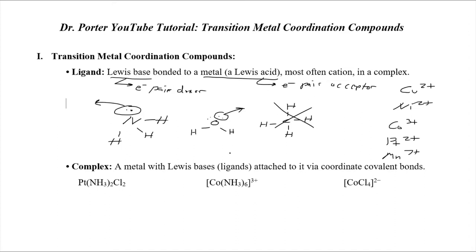So if we draw ammonia with its lone pair and then have something like cobalt(III), which is really electron deficient, it's going to crave that electron density from the Lewis base. You have your Lewis base — our ligand — and your Lewis acid, the metal, and you form a coordinate covalent bond. That's a shared electron bond where the electrons are donated from the ammonia. This applies to any metal complex we talk about later, no matter how complicated it gets — it goes back to this fundamental idea.